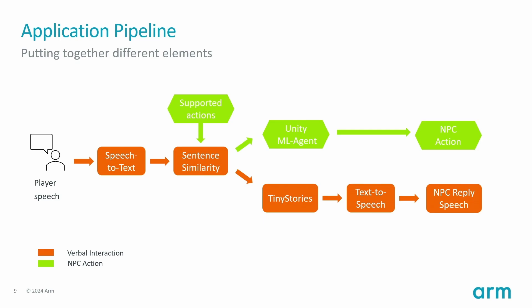Based on these requirements, we designed the pipeline you can see in the slide. It is composed of a sequence of five modules. The speech-to-text module converts player speech to text. The decision model decides whether to perform an action or dialogue — for this we use a sentence similarity model. The action model executes the desired action using Unity simulations. The language model generates responses to dialogues using the Tiny Stories language model. Finally, the text-to-speech module outputs language model responses as speech. The MLP brain is a two-layer multi-layer perceptron model with 256 hidden units. We use Sentis CPU backend for inference — Sentis is Unity's inference engine, formerly known as Barracuda.